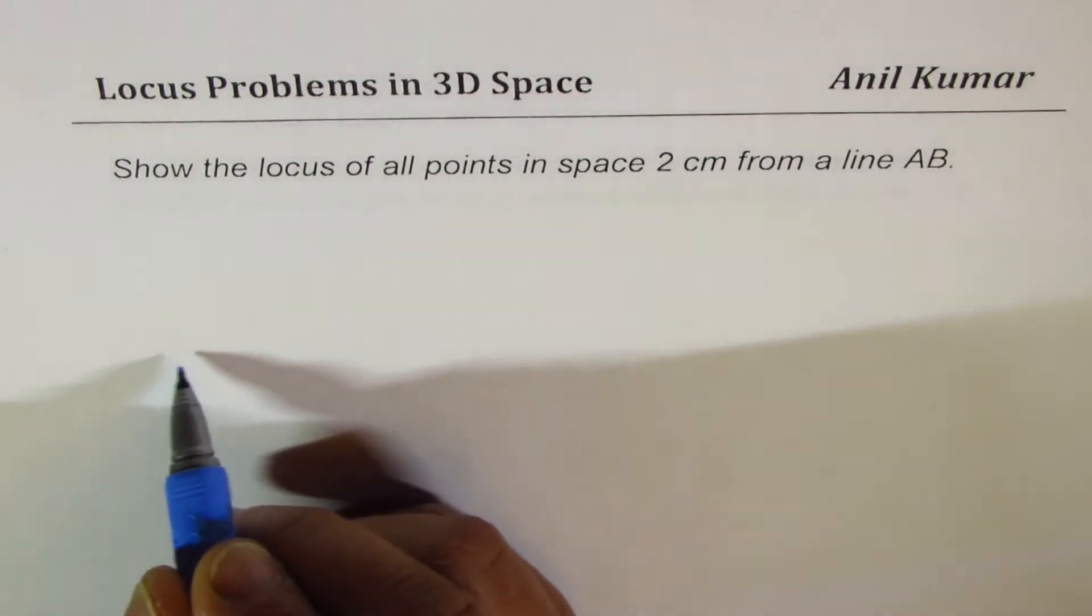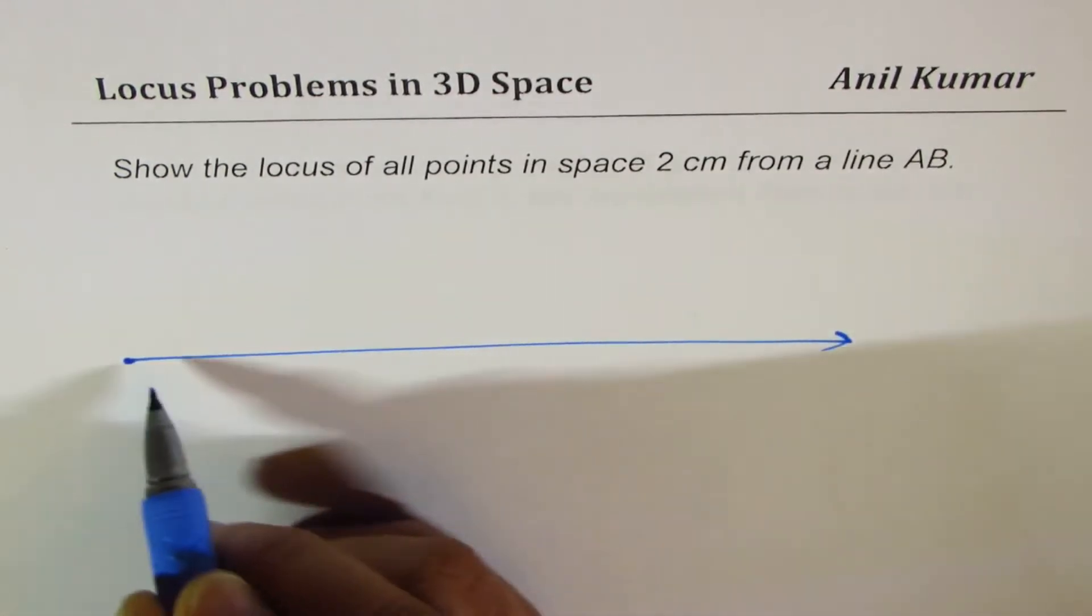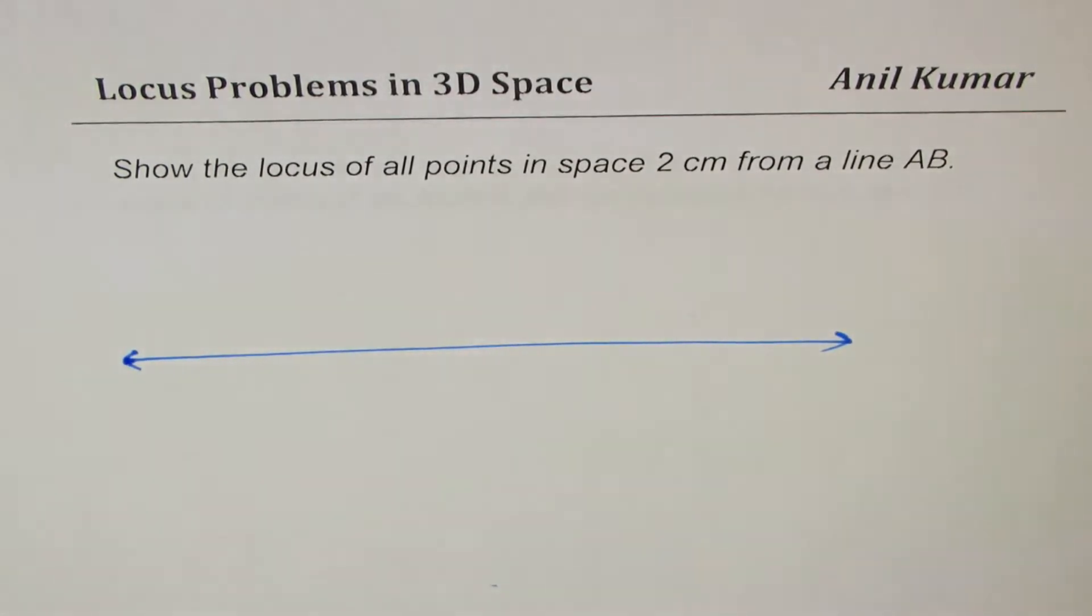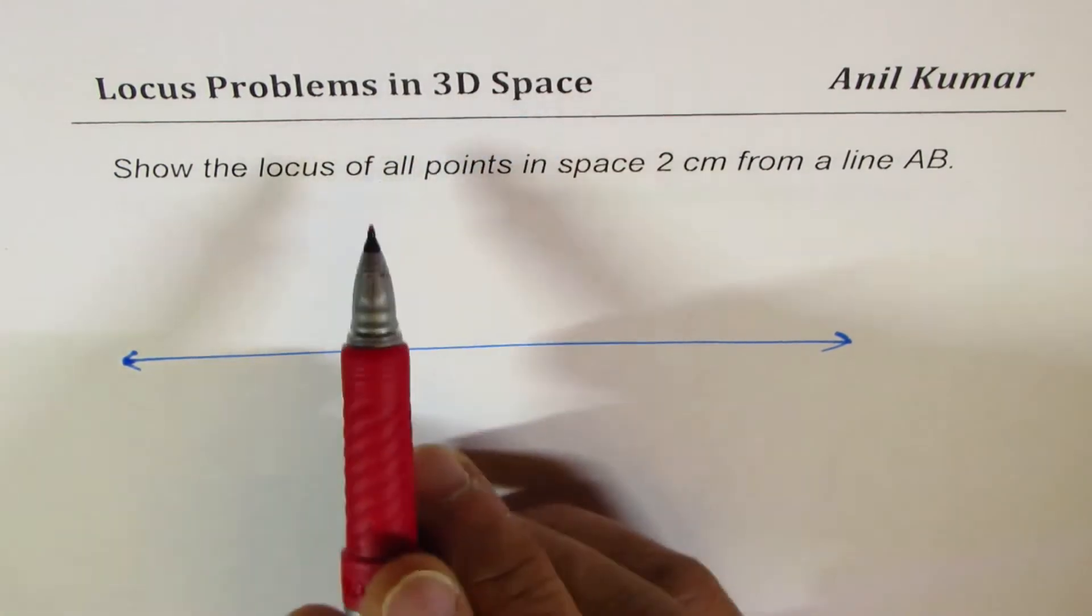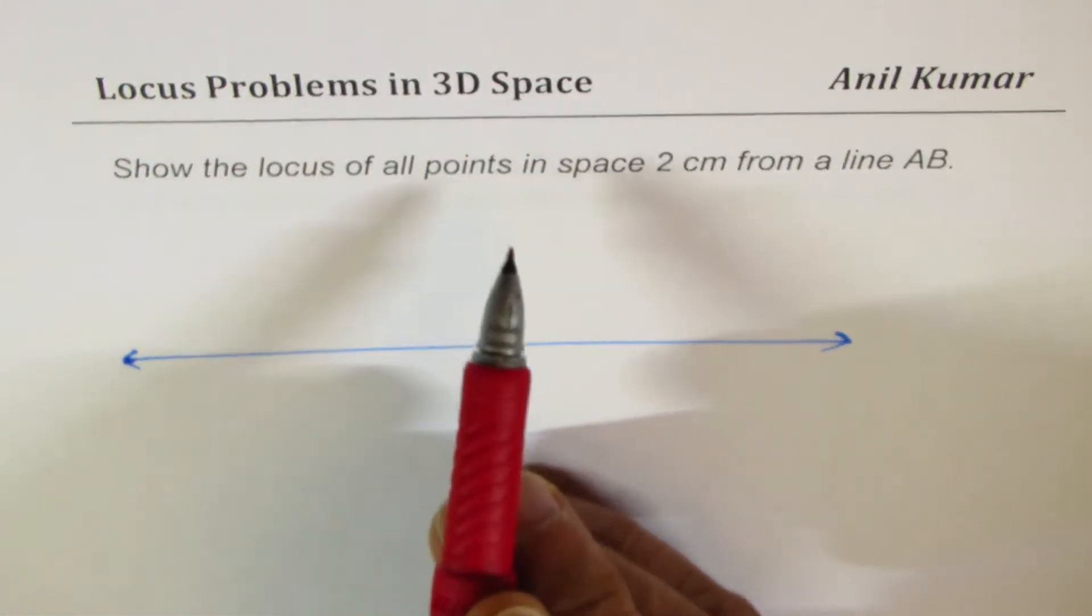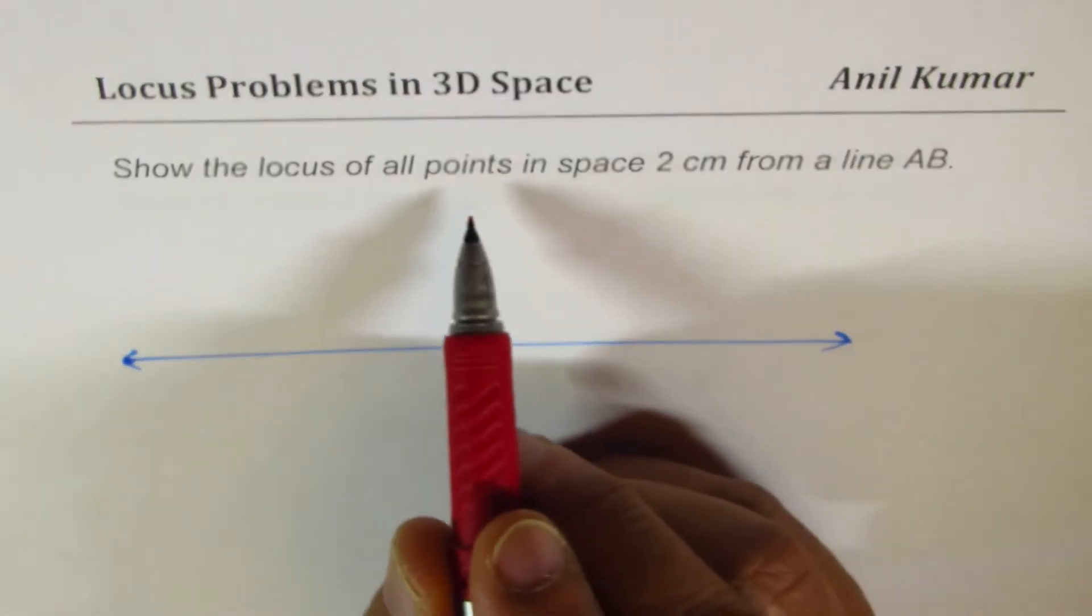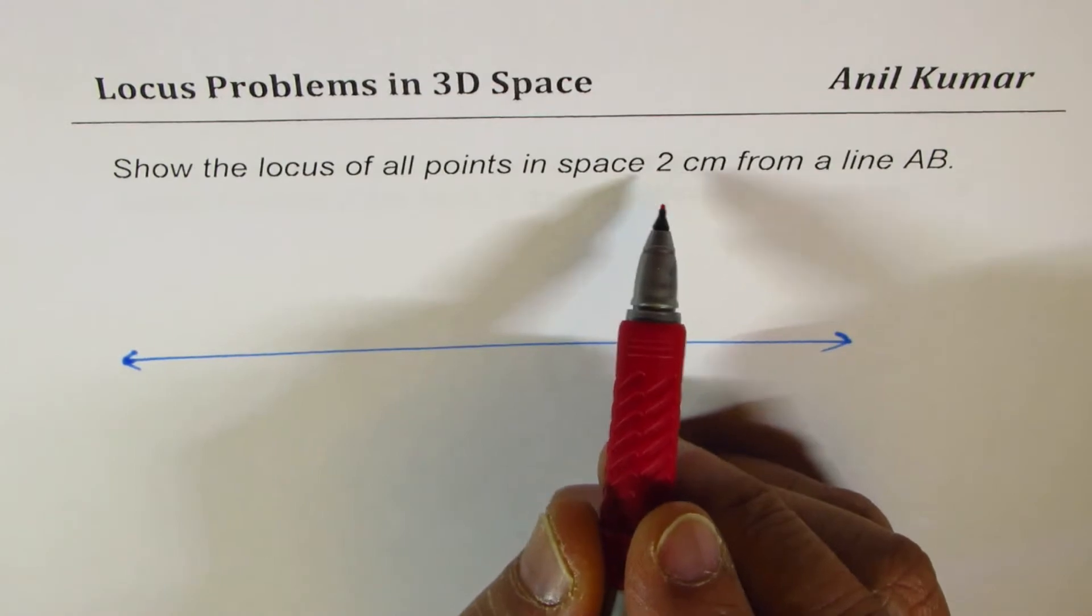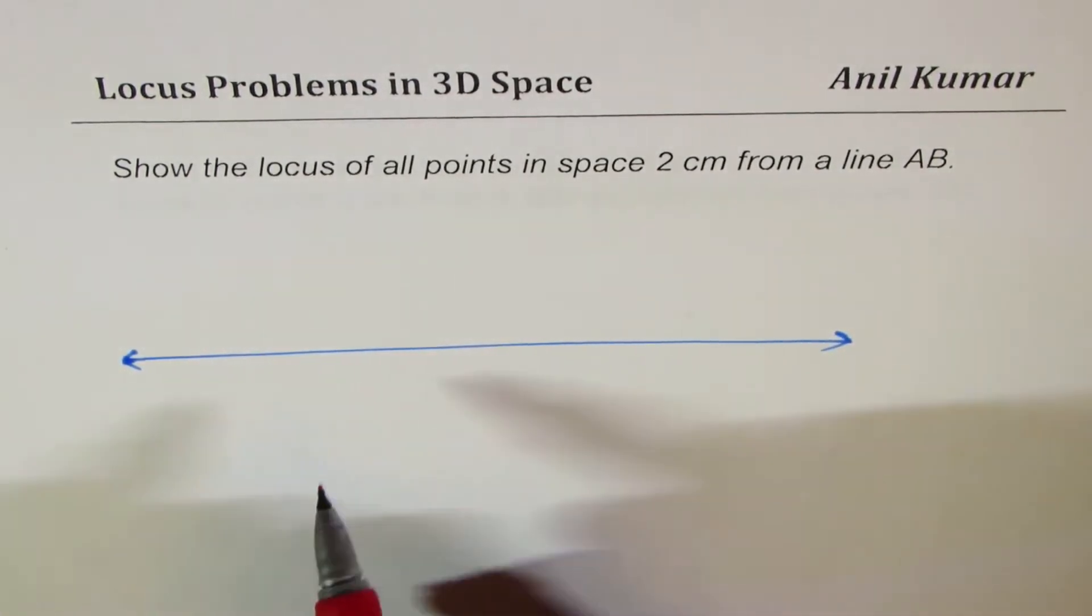So, I'll just make rough sketches here to give you an idea. When we say line, line means something which extends in both directions, correct? Now, we want in 3 space, that means R3, all the points, locus means set of points which meet a criteria. The criteria here is points in the space 2 cm from a line. So, we want 2 cm away from a line.